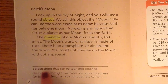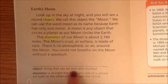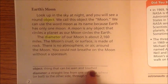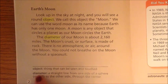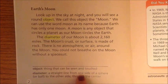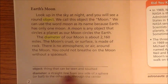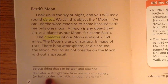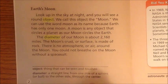Object: a thing that can be seen and touched. Diameter: a straight line from one side of a sphere or ball to the other side through the center.